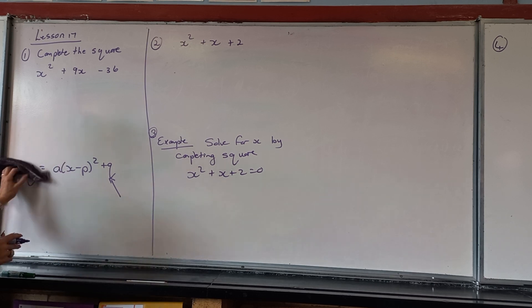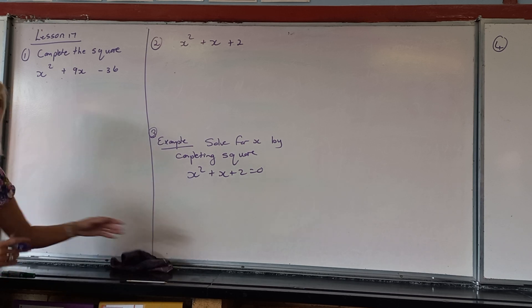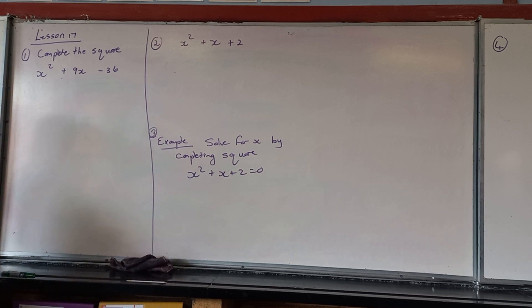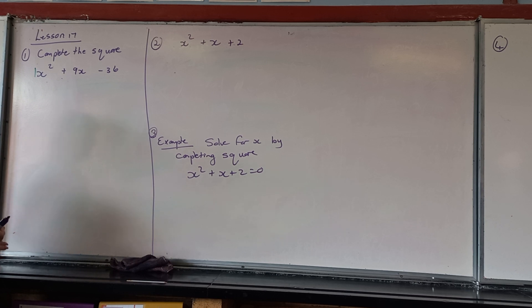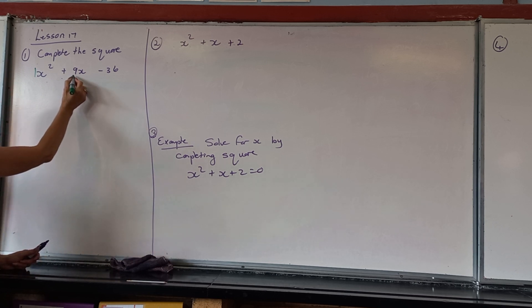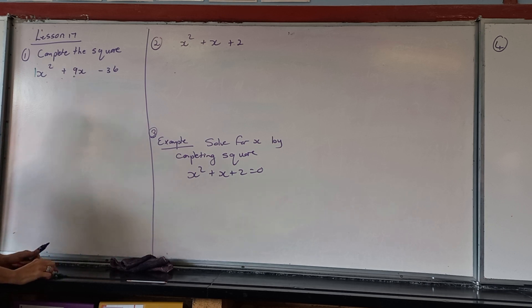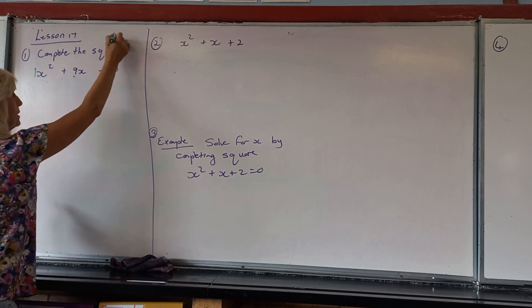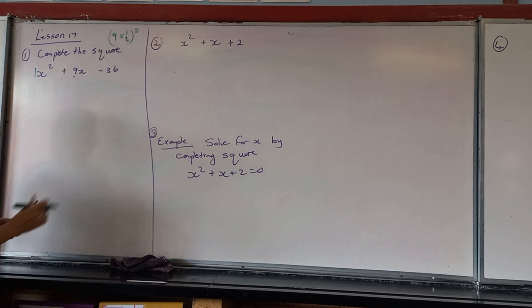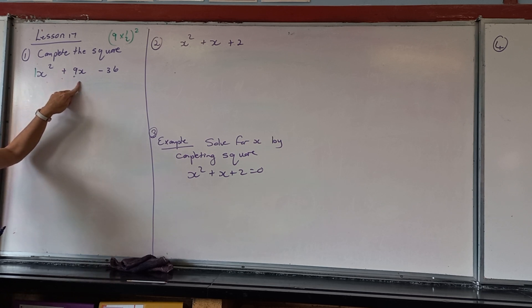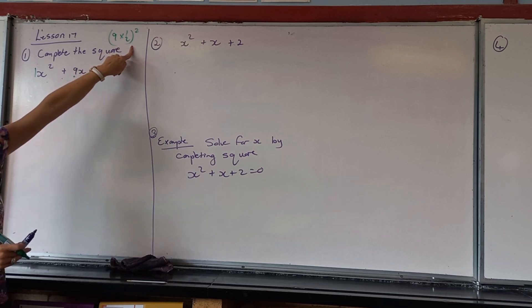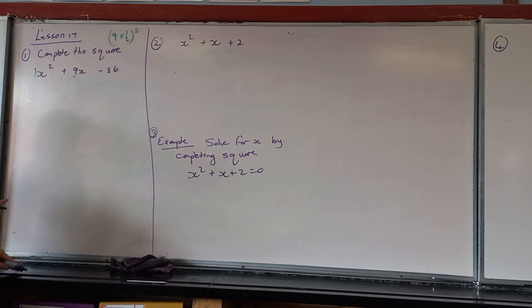For completing the square, there's a technique. If the coefficient of X squared is 1, which is the easy examples we started with, then we can take the coefficient of X, which is 9, and do a certain technique with that. You take the 9, times it by a half, and square it. Always. If the X squared coefficient is 1, we take the coefficient of X, which is plus 9, times the half and square it, and we get an answer that we're going to be adding in.